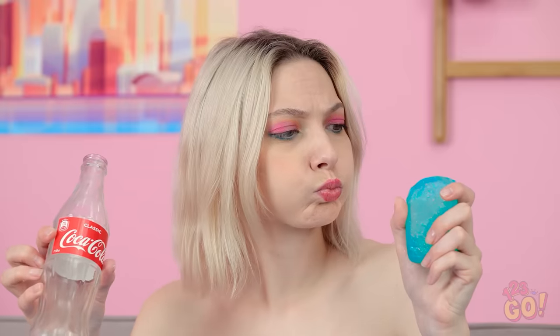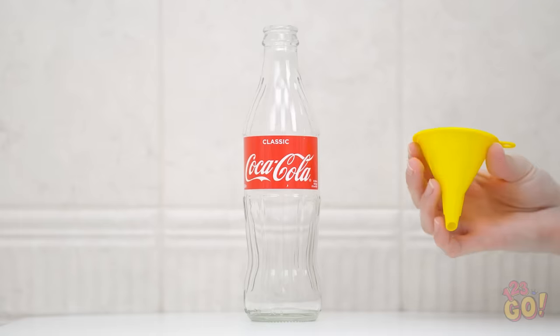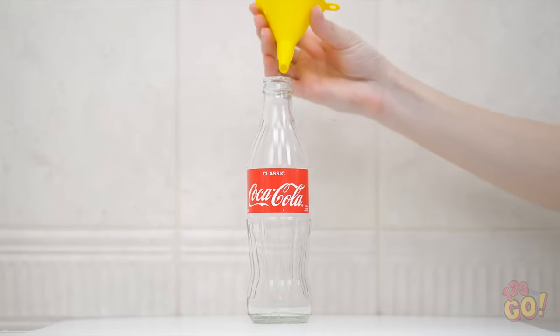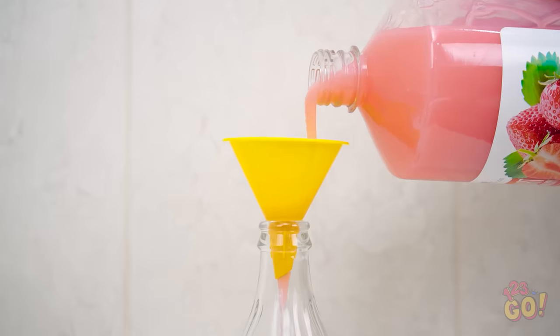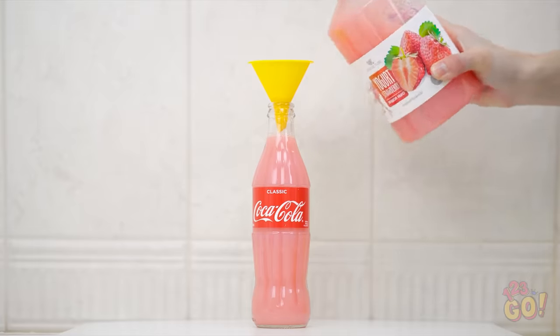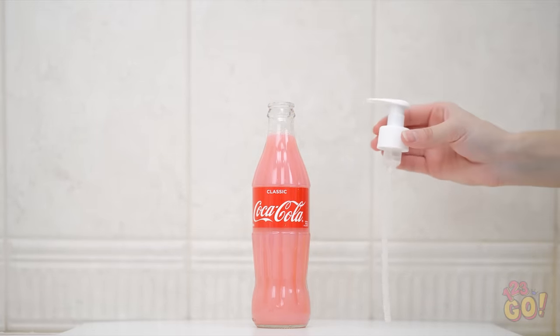You still using that bottle? Now that it's empty, let's make use of this thing. You'll need an empty glass bottle and a funnel. Put the funnel on top of the bottle and pour in your favorite soap. Once it's filled to the top, remove the funnel and screw on a pump like this.